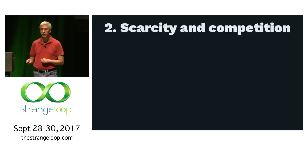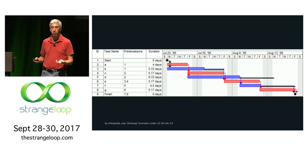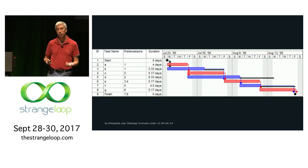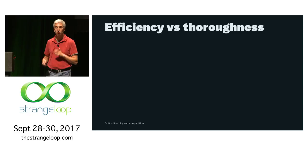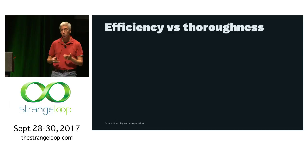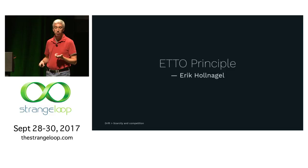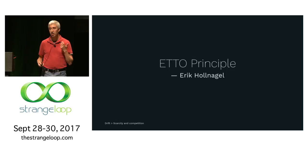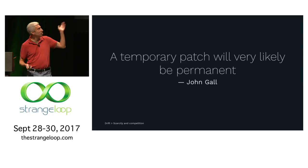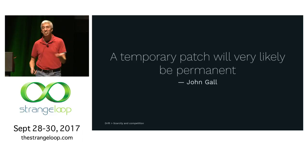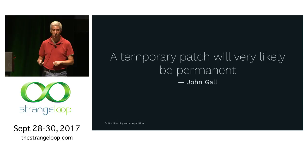The second concept is scarcity and competition — we're always resource constrained, particularly time constrained. We have schedule pressure, we work in competitive environments, and we have to make trade-offs. We're always making trade-offs between efficiency — how much work we can get done — and thoroughness — how complete we can be on any given task. Eric Hollnagel, another safety researcher, called this the efficiency-thoroughness trade-off. We are always, always making these trade-offs every day. This is not unique to software engineers — it's part of being a human being. We create temporary patches, we make trade-offs, and eventually those things are going to bite us.